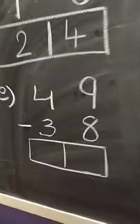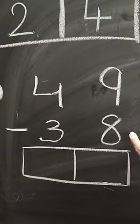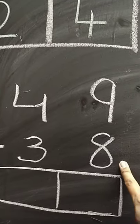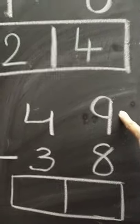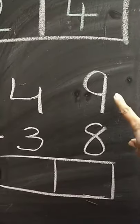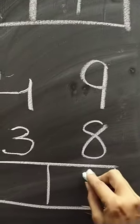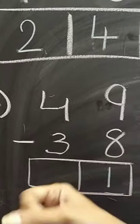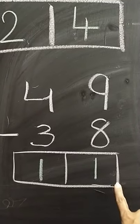Now, here we can see E. 9 minus 8 — we have to subtract 8 from 9. We have to remember that we can subtract a smaller number from a bigger number. We cannot subtract a bigger number from a smaller number. So, 9 minus 8 — what comes after 8? 9. So, 9 minus 8 will be 1. And 4 minus 3 — what comes after 3? 4. So, 4 minus 3 will be 1 again. Our answer is 11.